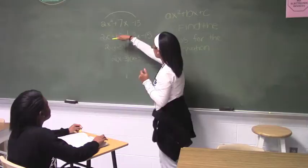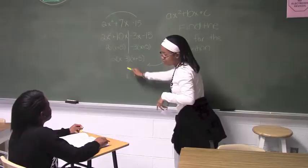AX squared plus BX plus C. AC method. 2 times negative 15, you get all this.